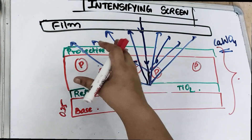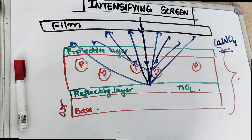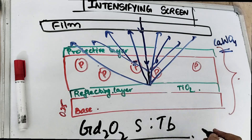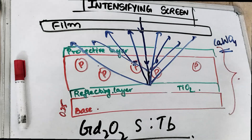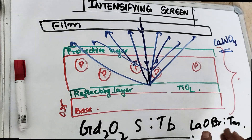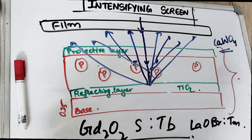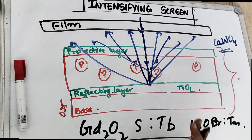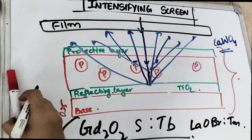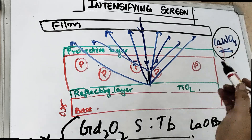In the rare earth intensifying screen, we are using rare earth metals: Gd₂O₂S:Tb (terbium-activated gadolinium oxysulfate) and LaOBr:Tm (thulium-activated lanthanum oxybromide). This produces green light. The efficiency of these rare earth intensifying screens is four times more effective compared to the conventional intensifying screen using calcium tungstate.